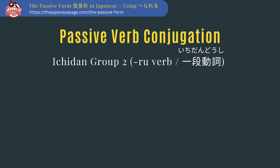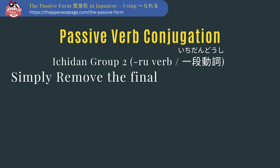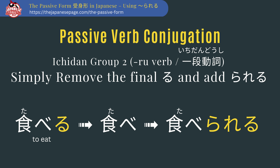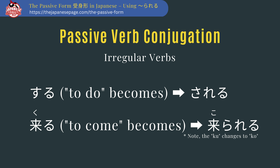If you're breaking a sweat, don't worry — ichidan group 2 verbs are much easier. Simply remove the final ru and add rareru. For example, taberu (to eat): remove the ru and add rareru to get taberareru. For the irregular verbs, you just have to memorize these, but there are only two: suru (to do) becomes sareru, and kuru (to come) becomes korareru.